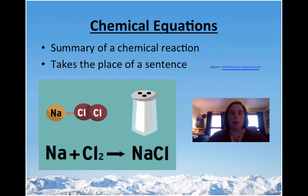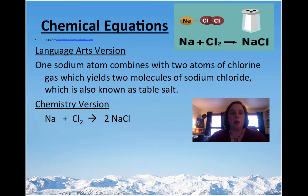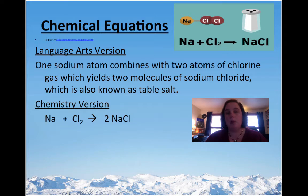Let's talk about chemical equations. What are they? They are a summary of a chemical reaction. They take the place of a sentence — you don't have to write down these long essays. It's quite simply symbols and numbers. For example, the language arts version would say: one sodium atom combines with two atoms of chlorine gas, which yields two molecules of sodium chloride, also known as table salt. That's an awful lot of writing.